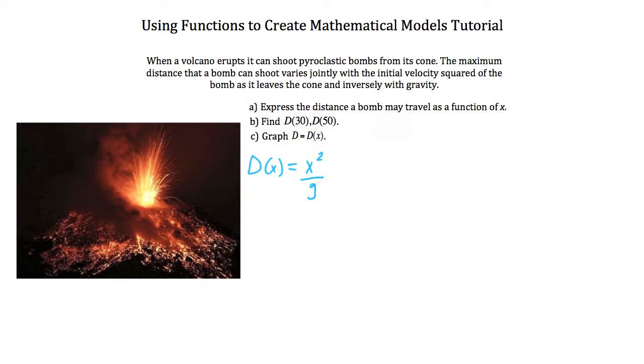Question B asks us to find D(30) and D(50). So let's write D(30), and we're going to plug in 30 for x. D(30) is equal to 30 squared divided by our gravity, which is 9.81 meters per second squared. So if we do that work, we find our distance for this particular pyroclastic bomb is going to be 91.75 meters.